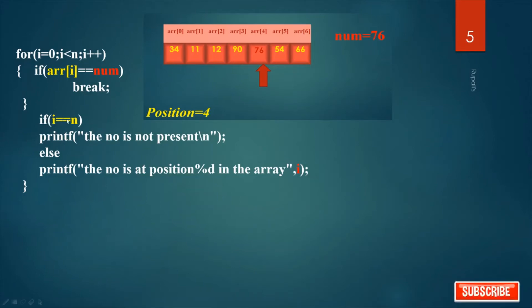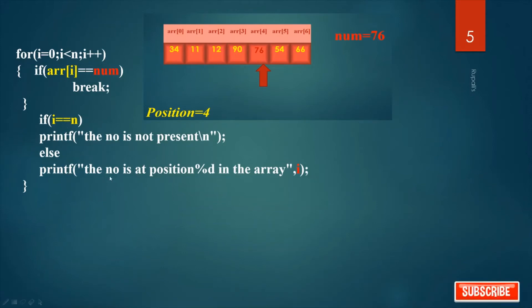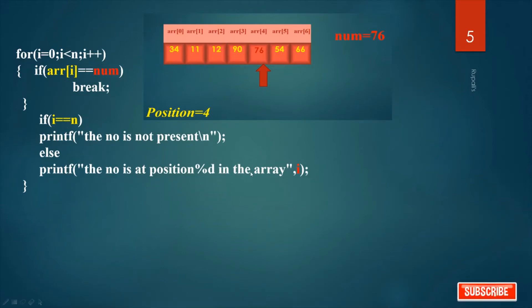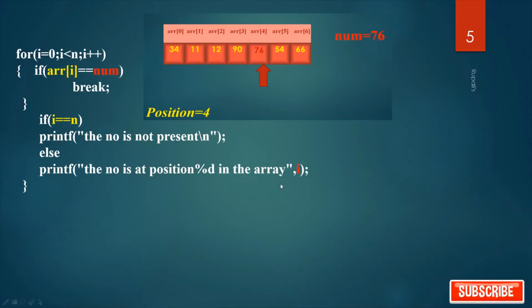Is i equal to n? What is n? n is the total number of elements, that is 7. Is i equal to 7? No. i is 4. So you have to print: the number is at position i in the array. i is 4, so the number is at position 4 in the array. This will be the output.